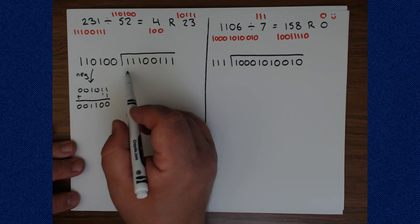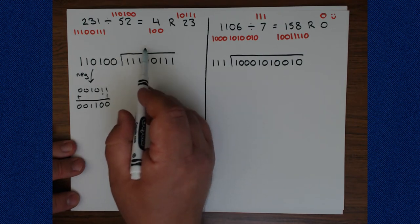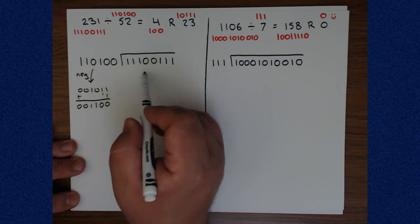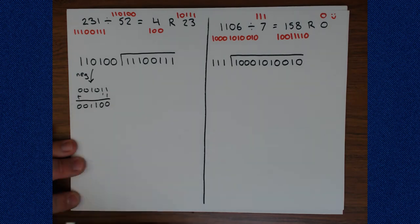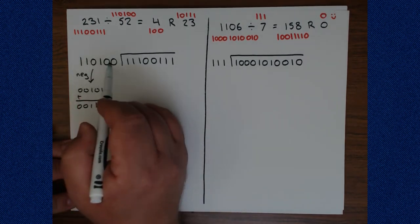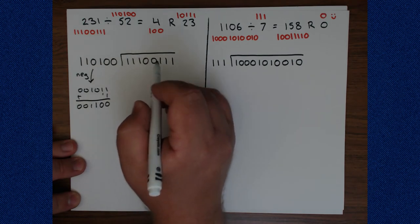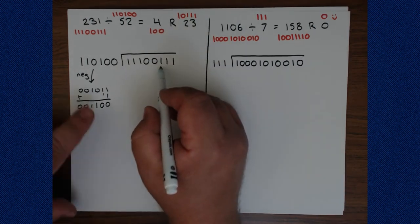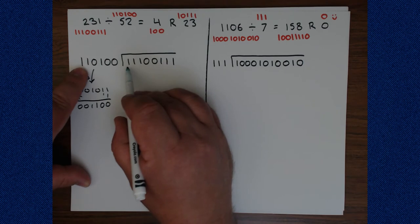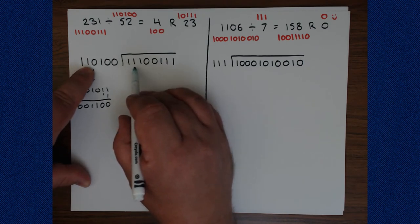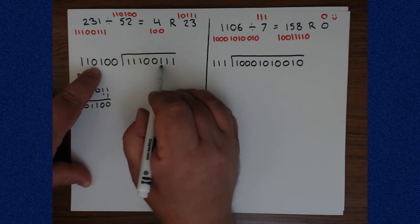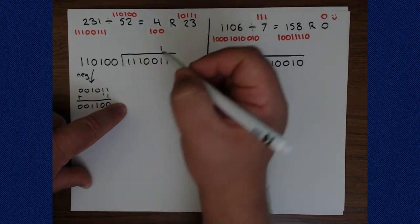We have six bits in the dividend and six bits in the divisor. This bit position is the first place we could have a meaningful value. Scanning to see which string is bigger: 1, 1, 1 — then a mismatch — 0 versus 1. This one has a 1 in it, which means this partial dividend is larger. So we're going to have a 1 here.